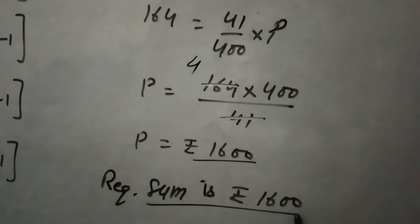So because this is the required sum, required sum means principle equals to 1600.